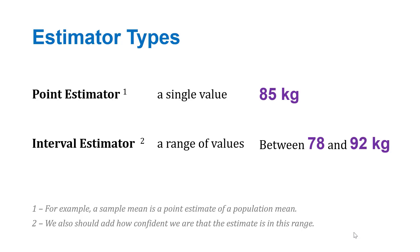The interval estimator is a range of values, like for example, between 78 and 92 kilograms. Our estimate is that it's within that range.